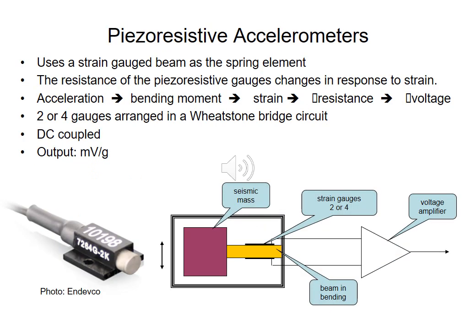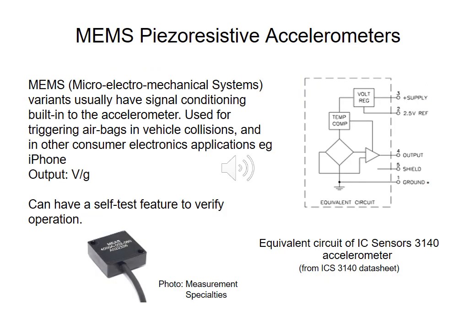Piezoresistive accelerometers operate by virtue of a mass attached to a beam which bends as a result of acceleration, causing the mass to vibrate. The beam — shown as the yellow element — has two or four strain gauges attached in a Wheatstone bridge configuration to complete the strain gauge circuit. Any acceleration, including acceleration due to gravity due to the bending of the beam from the attached mass, is measured. This is a DC-coupled measurement with output typically in millivolts per g, and a voltage amplifier is attached immediately after the strain gauges.